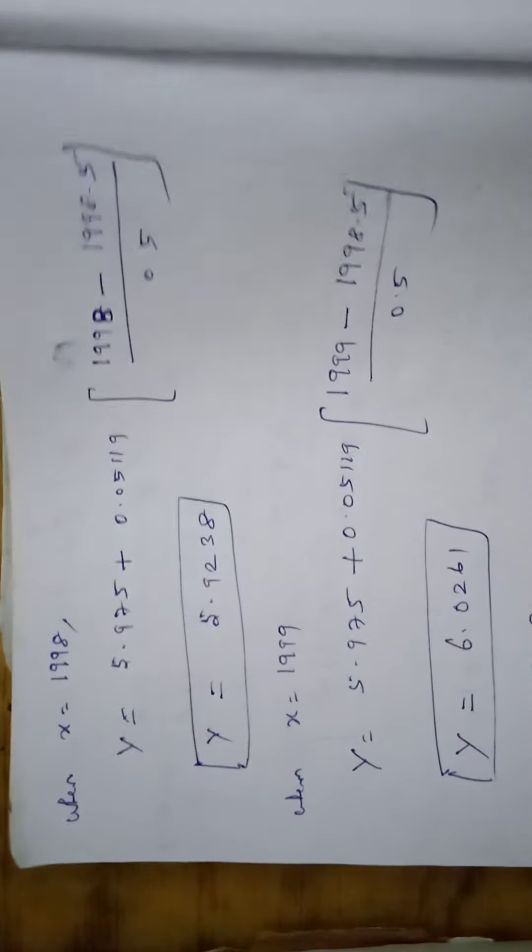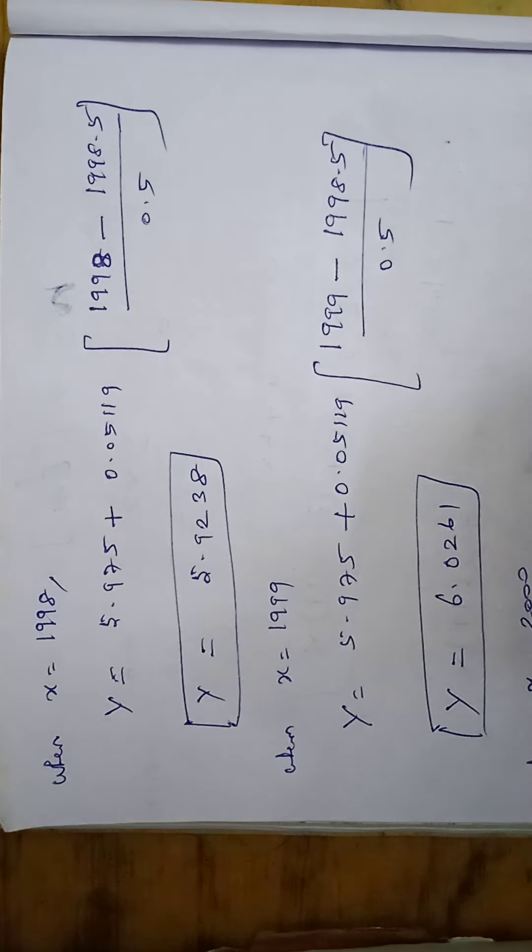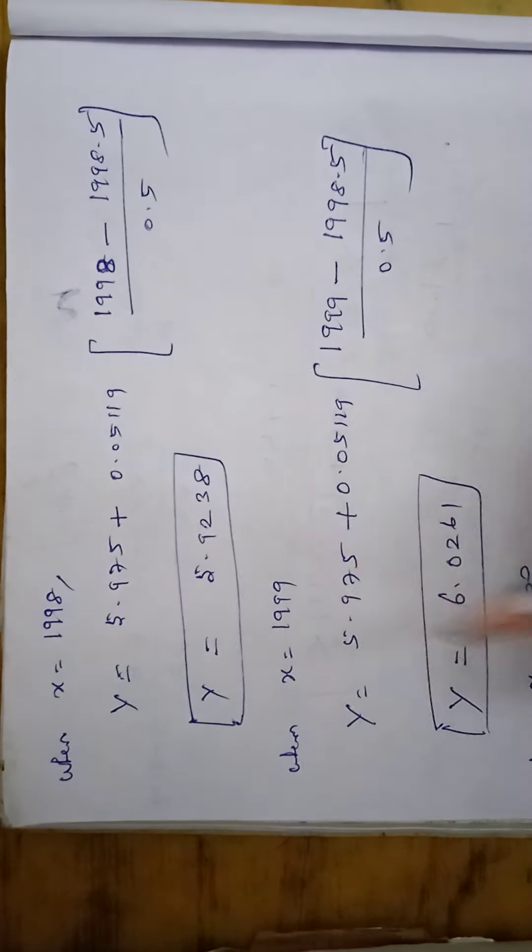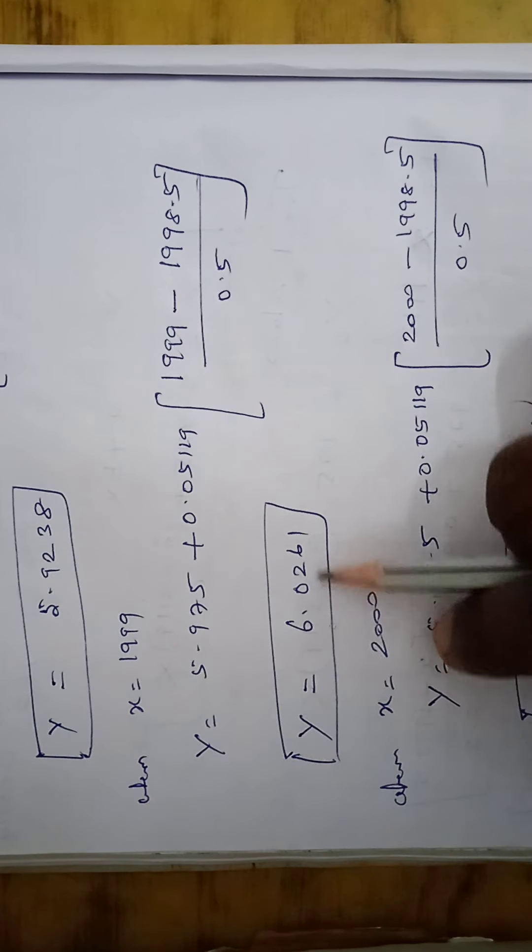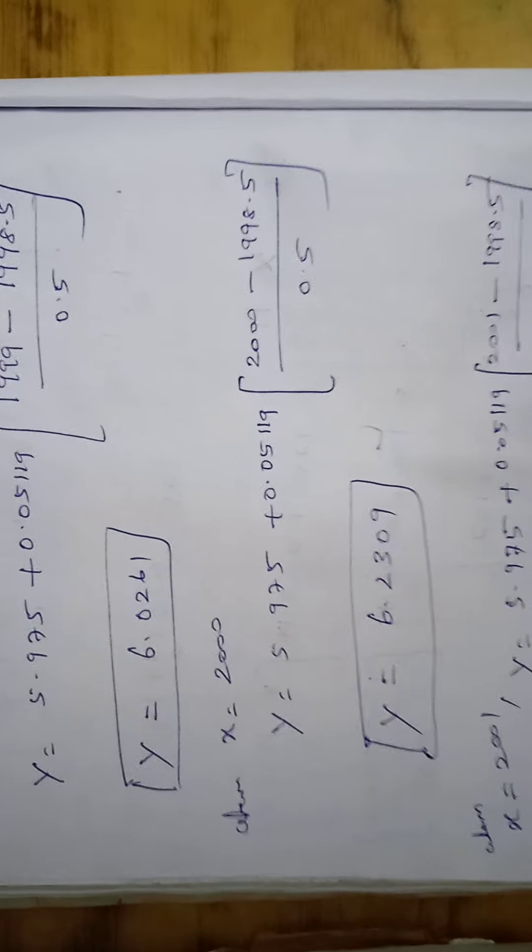In the next year 1998, the answer is 5.9238. In the year 1999, answer is 6.0261. In the year 2000, answer is 6.2309.